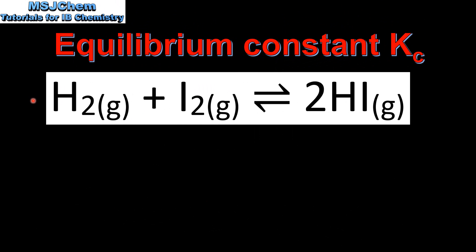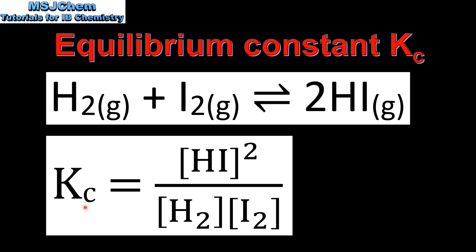Next we will write the equilibrium constant expression for this reaction in which hydrogen reacts with iodine to form hydrogen iodide. Here we have the equilibrium constant expression for the above reaction. In the numerator we have the concentration of the products raised to the power of the coefficient, which in this case is 2. In the denominator we have the concentrations of the reactants, which are hydrogen and iodine.